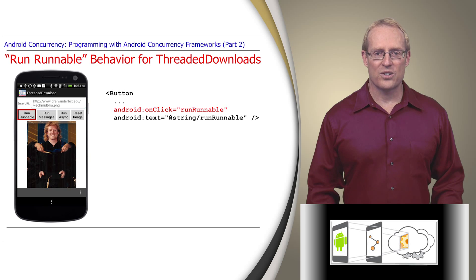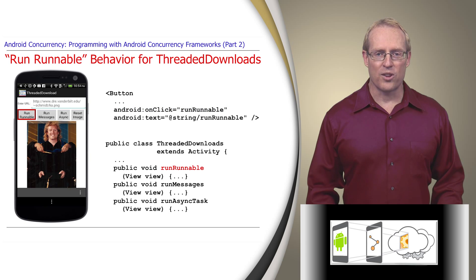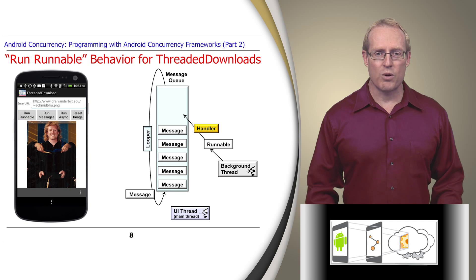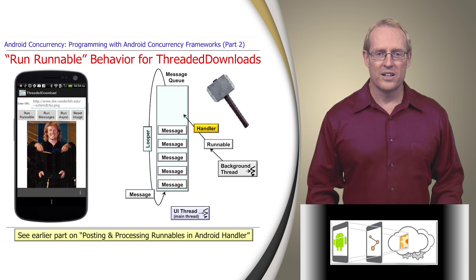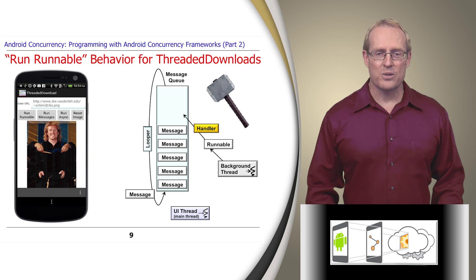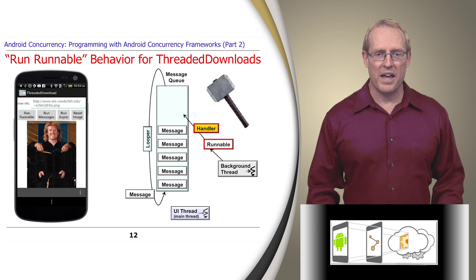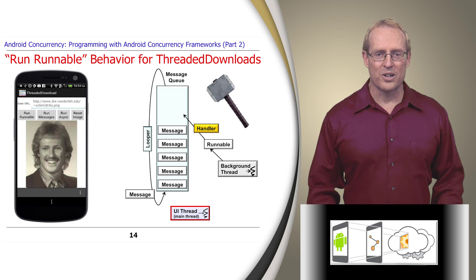This selection initiates a call to the Run Runnable method in the Threaded Downloads class, shown at this path name. This method uses the post-runnable mechanism of the Hammer framework, described in an earlier video. The Threaded Downloads application uses this framework to retrieve and display an image by starting a background thread, downloading the image in that thread, and then posting a runnable command to the user interface thread, instructing it to display the downloaded image.